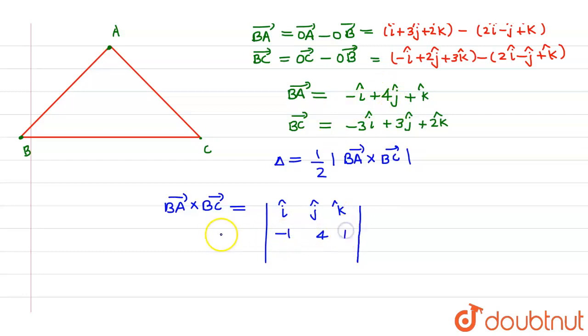So minus 1, 4, and 1. And at last, the last row will be filled by components of BC vector along i, j, k, which are nothing but minus 3, 3, and 2. So if I expand this particular determinant,